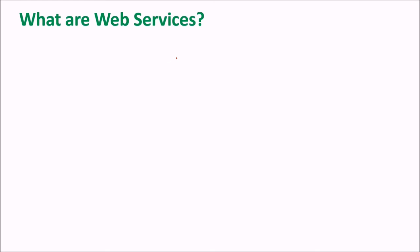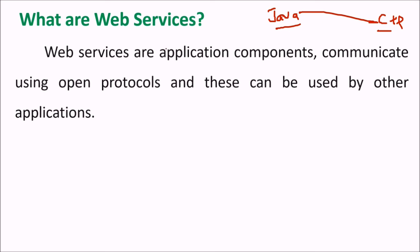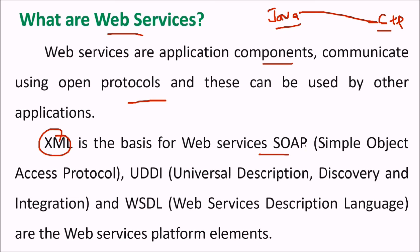What are web services? Web services are a technique or methodology to allow communication between two different applications in an interoperable manner. For example, one application built in Java and another in C# can communicate through web services. Web services are an implementation of Service Oriented Architecture (SOA). They communicate using open protocols, and XML is the basis of web services. The web services platform includes SOAP (Simple Object Access Protocol), UDDI (Universal Description, Discovery and Integration), and WSDL (Web Services Description Language).